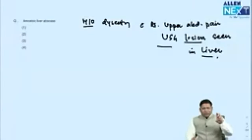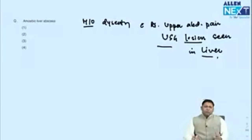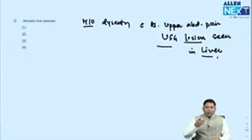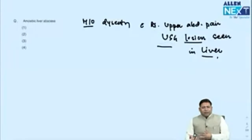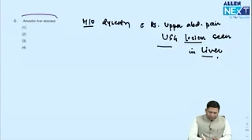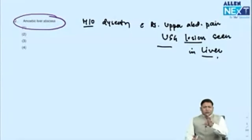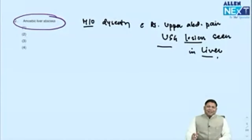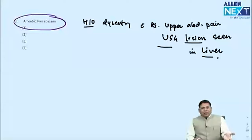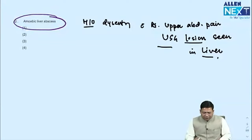Amoebic liver abscess: a patient with history of diarrhea for six to eight weeks with recent onset right upper quadrant pain, and ultrasound showing an abscess-like profile in the liver. This is amoebic liver abscess. Pyogenic liver abscess does not have a dysentery profile and jaundice will dominate — a cholangitis-like profile. Hydatid disease has a different USG presentation. This is a classical, straightforward amoebic liver abscess presentation.